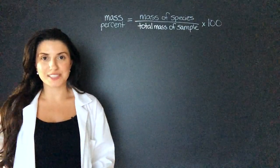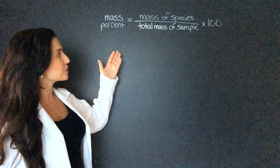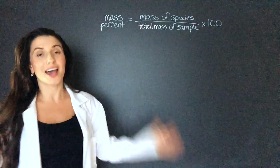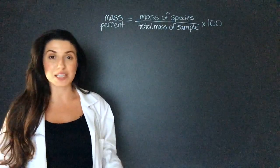Like any percentage problem, the mass percent is equal to the mass of the species divided by the total mass of the sample times 100. We can use mass percent to find